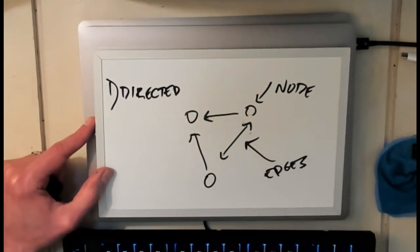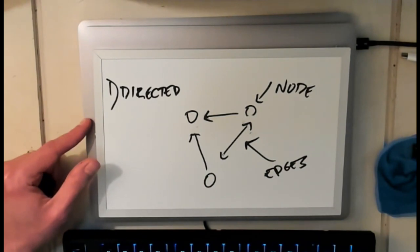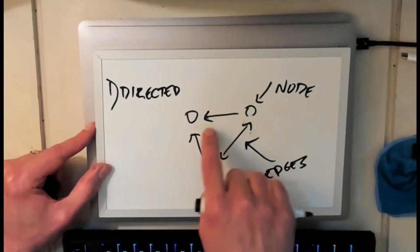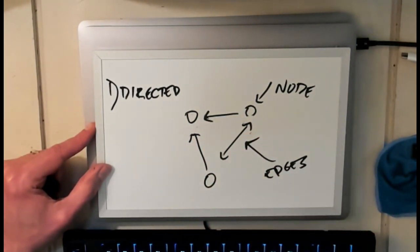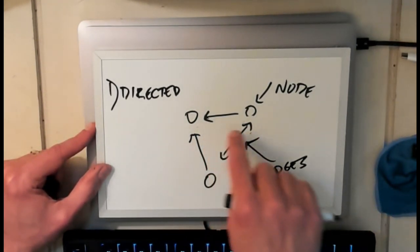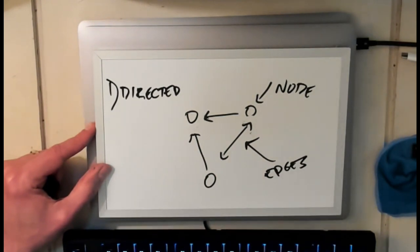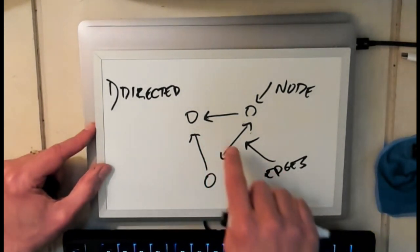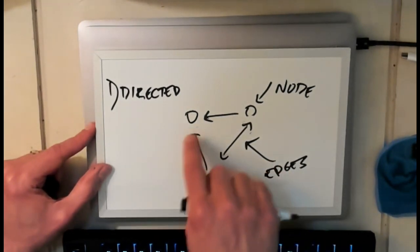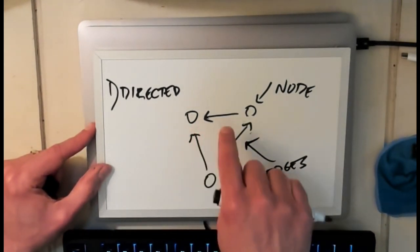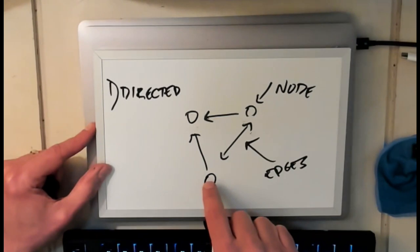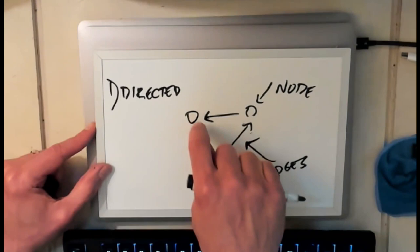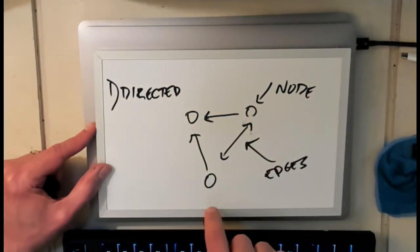When we talk about directed graphs there's actually both a strong connected property and weak connected property. The weak connected property represents that if I took all the edges and replaced them with edges in an undirected graph would the graph be connected. So this graph is weakly connected but it's not strongly connected because I can't actually follow the edges from every node to every other node. This node can get to this node and this node. This node can get to this node and this node but this node is stuck. If I start here I cannot reach the other two nodes in the graph.